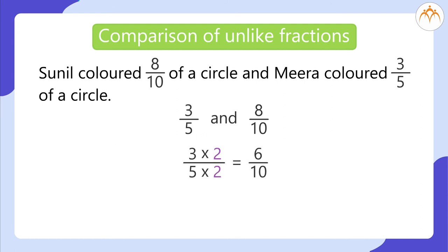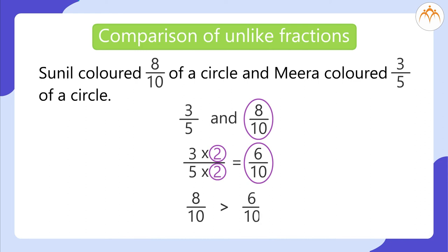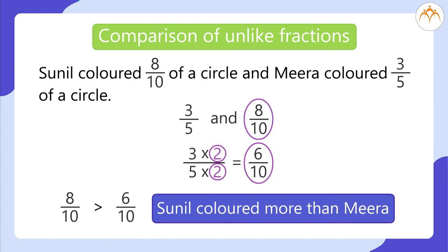3 multiplied by 2, by 5 multiplied by 2, is equal to 6 by 10. We multiply the numerator and denominator by 2. So 6 by 10 is equivalent to 3 by 5. Now we have the denominator 10. The denominators of 8 by 10 and 6 by 10 are the same — they are like fractions now. It is easy to compare: 8 by 10 is greater than 6 by 10. Therefore, Sunil colored more than Meera.